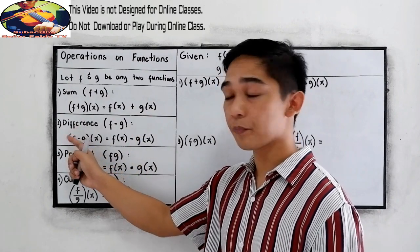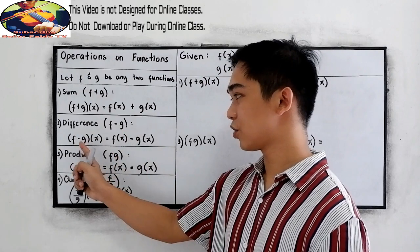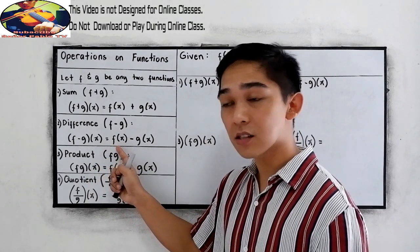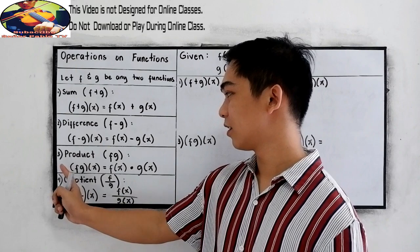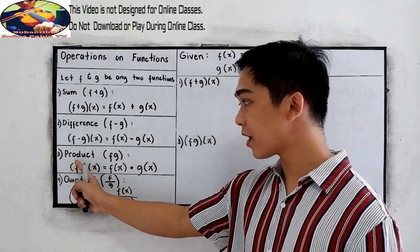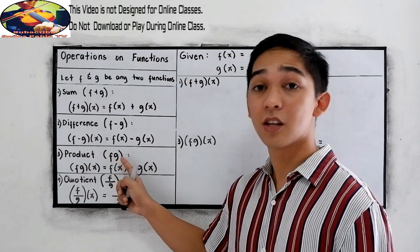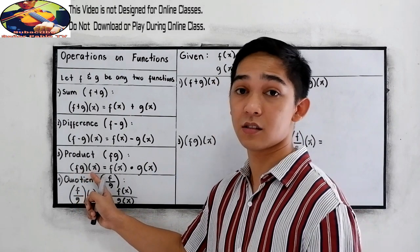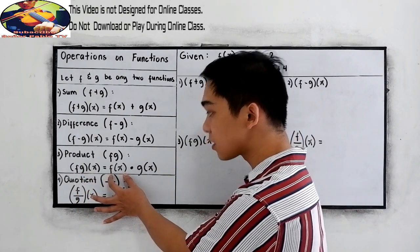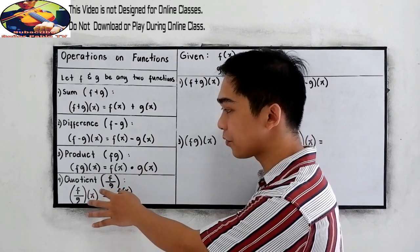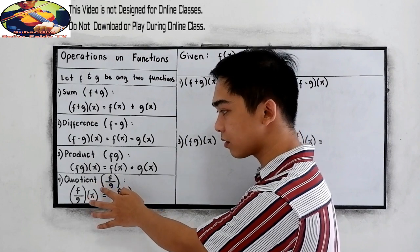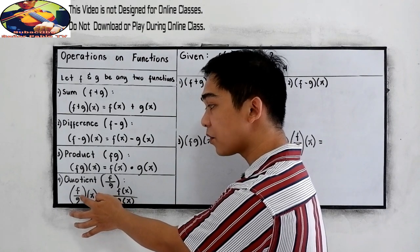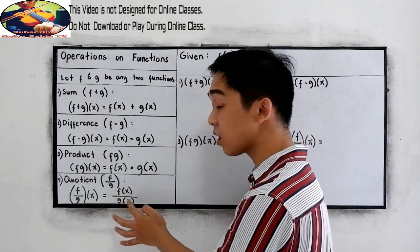And for the difference, f minus g, so we have (f−g)(x) is equal to f(x) minus g(x). For the multiplication, to find the product, (f·g)(x) is equal to f(x) times g(x). And for the division or quotient, (f/g)(x) is equal to f(x) over g(x).